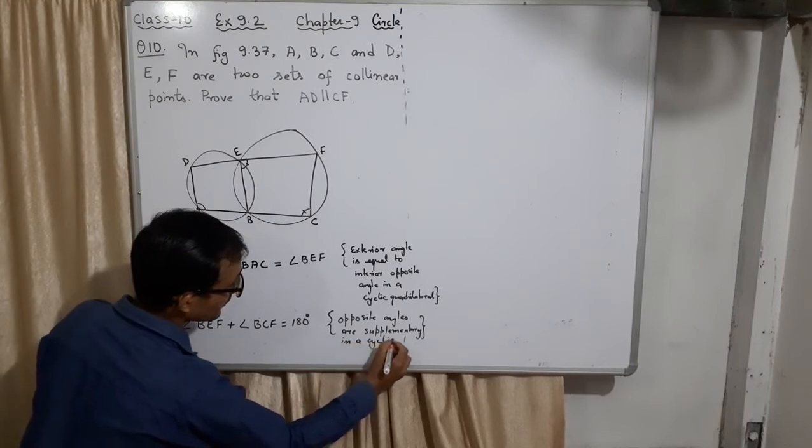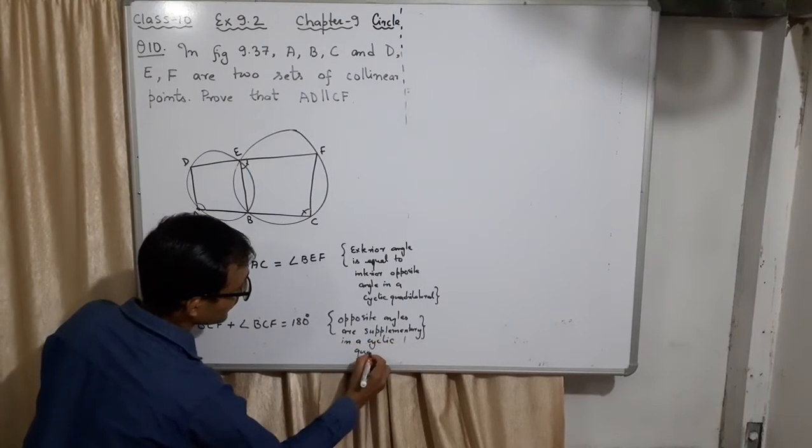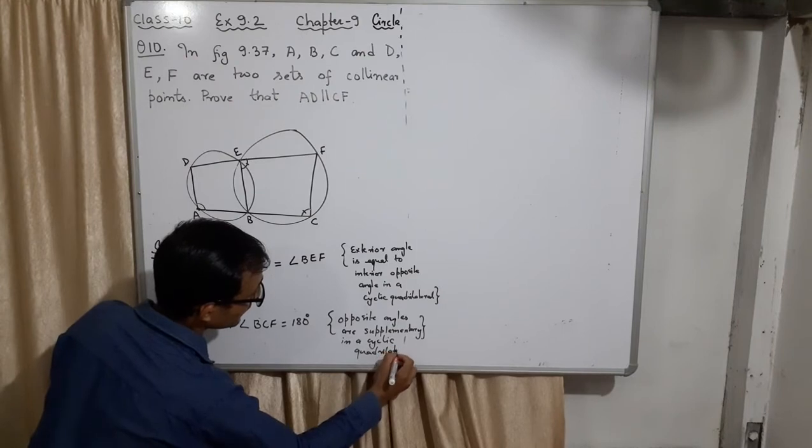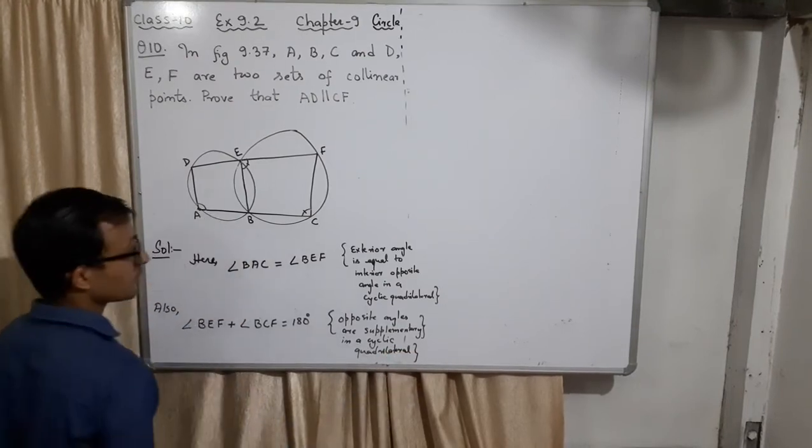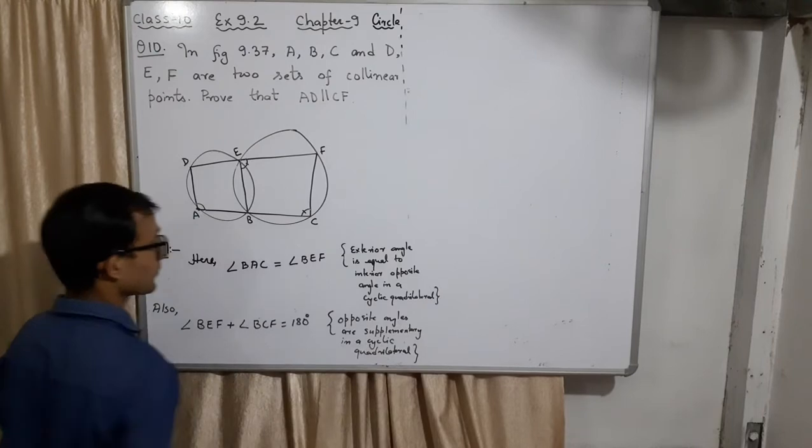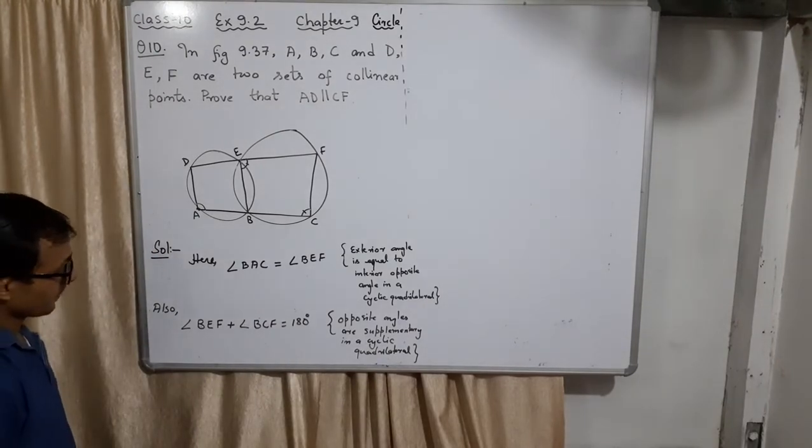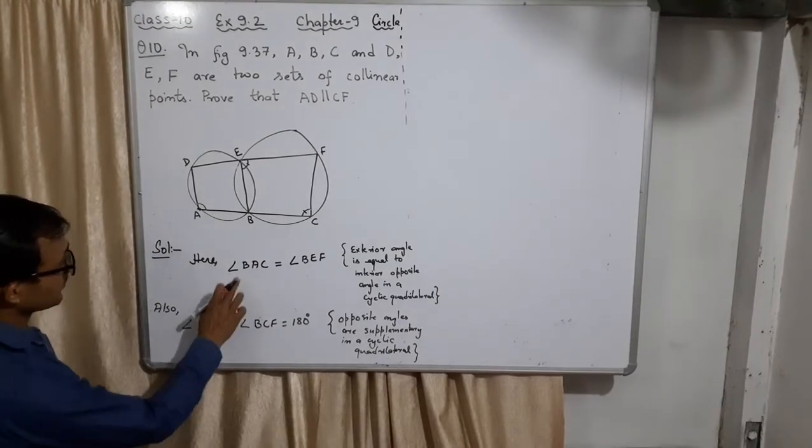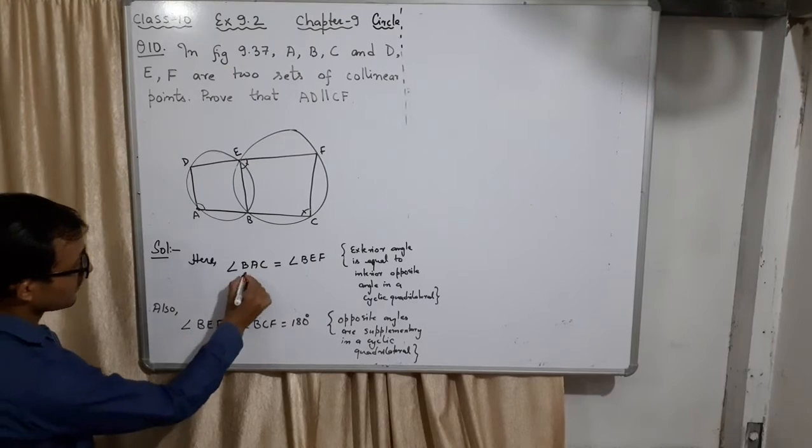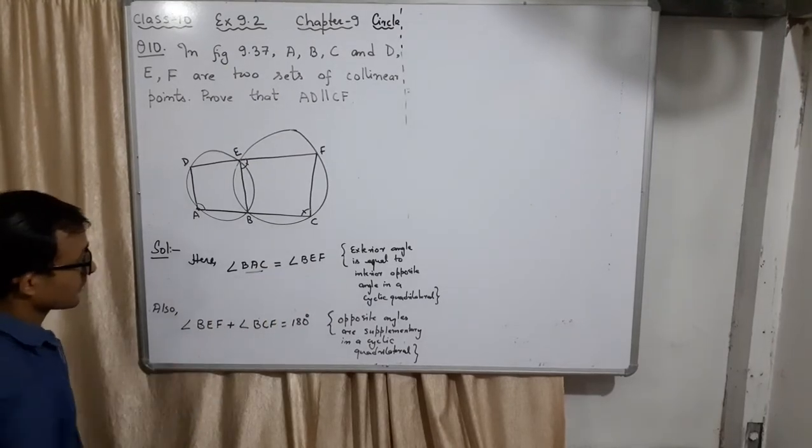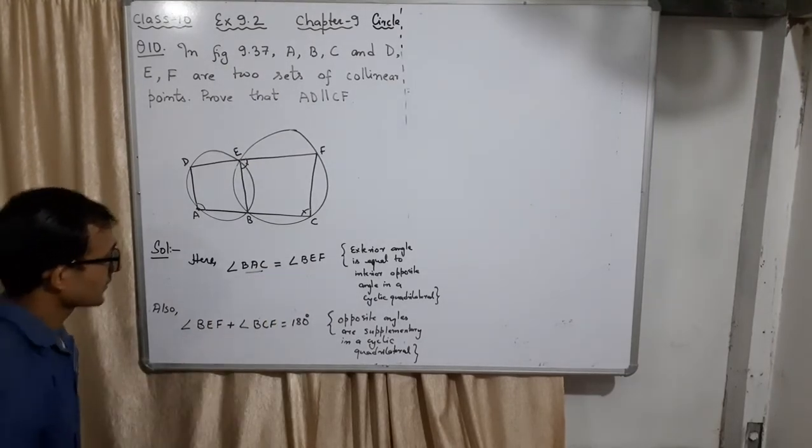In a cyclic quadrilateral, this was the reason. Okay, now to combine these two, what we have found is BAC. I will replace this from here. From one and two, you can also write so...